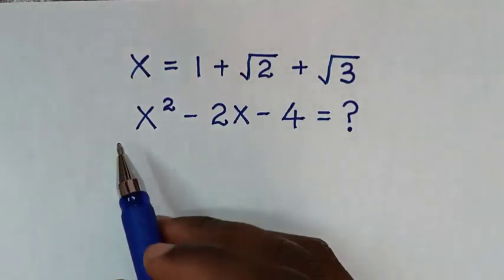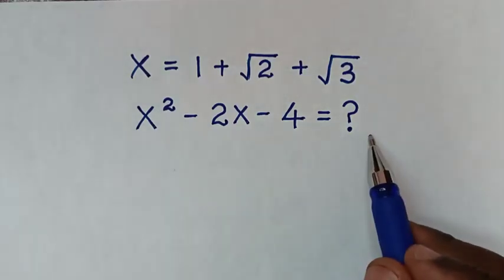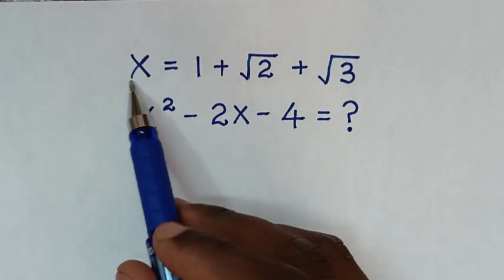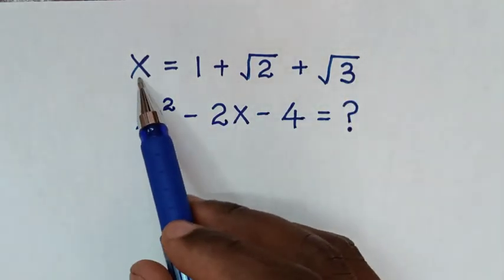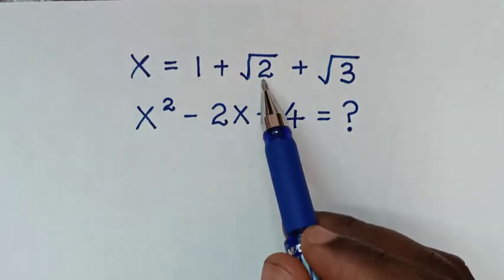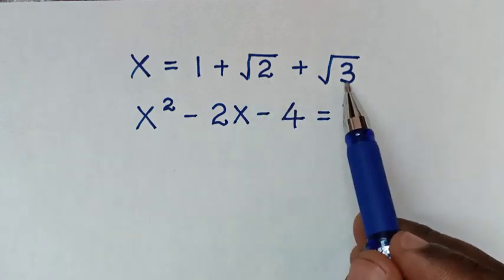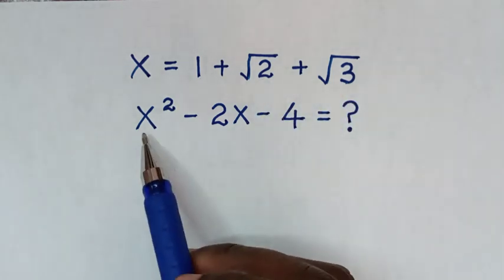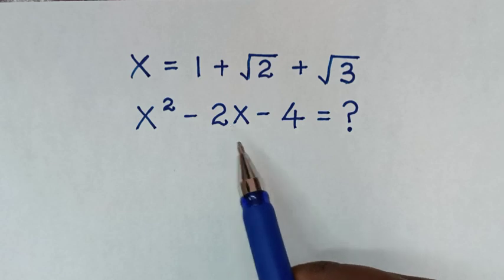Hello, you are welcome to solve this math problem. We are given the equation x = 1 + √2 + √3, and we need to find the value of x² - 2x - 4.